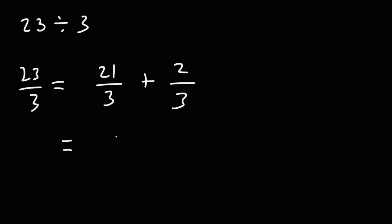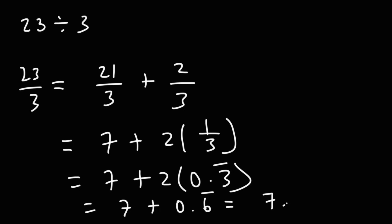Now, 21 divided by 3 is 7. 2 over 3, I'm going to write it as 2 times 1 third. We know that 1 over 3 is 0.3 repeating, so if you multiply that by 2, this is going to be 0.6 repeating. Therefore, 23 divided by 3 is 7.6 repeating.